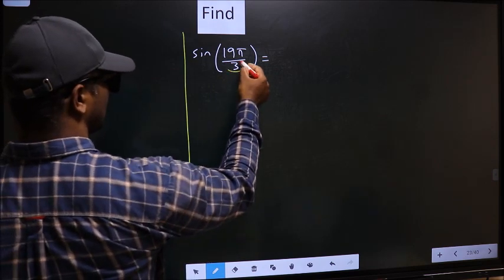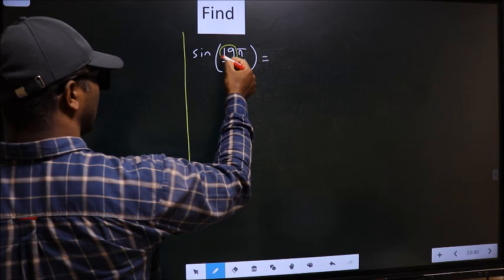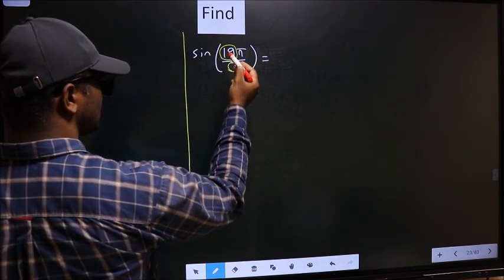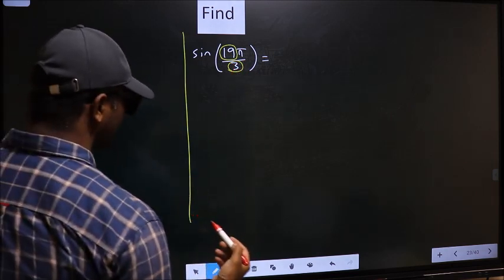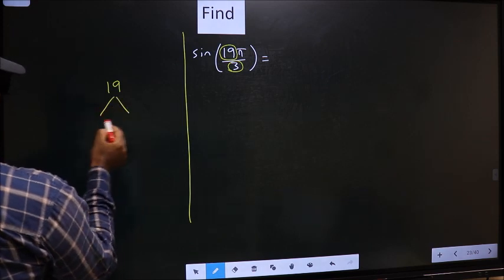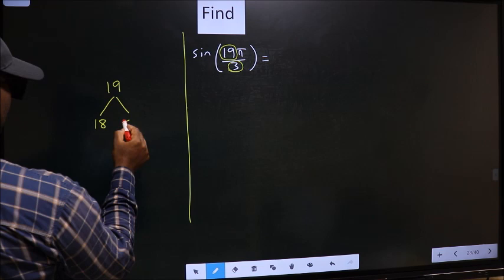Here in the denominator we have 3. In the numerator we have 19. Now we should look, 19 is close to which multiple of 3. What I mean is 19, and here you write multiples of 3. That is 18 and 21.